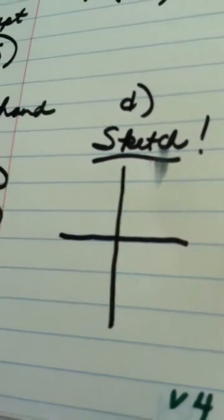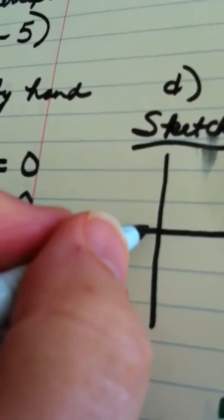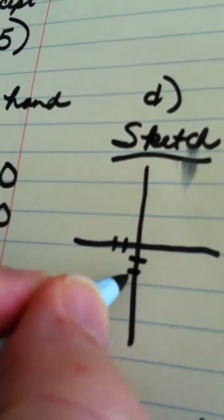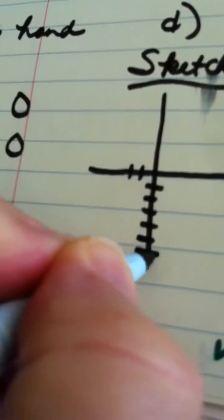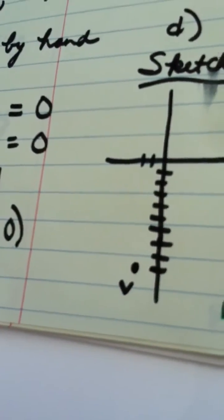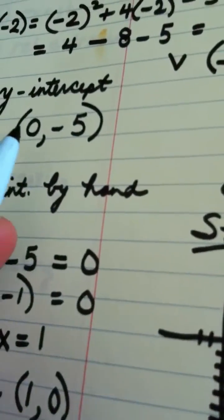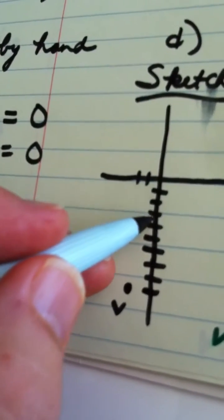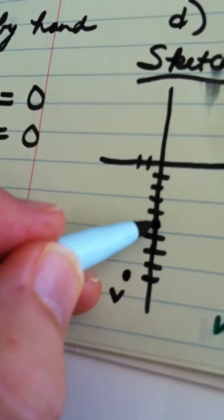The vertex is the ordered pair negative 2 negative 9. Negative 2 negative 9, 1 2 3 4 5 6 7 8 9, so my vertex is down here. Okay negative 2 negative 9. My y-intercept is 0 negative 5, negative 1 2 3 4 5, put a dot there.